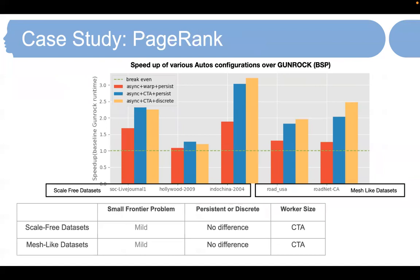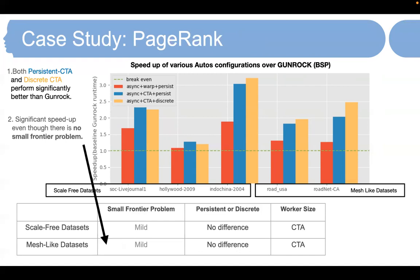Our third case study is PageRank. We again consider the same three ATOS variants, using GUNROCK PageRank as our baseline. The figure shows the speedup of the three ATOS variants compared to the GUNROCK PageRank baseline. ATOS asynchronous CTA worker with both persistent kernel and discrete kernel performed the best. We highlight the fact that significant speedup is achieved even though there is no small frontier problem — the speedup of ATOS is due to lower overhead and better load balancing.